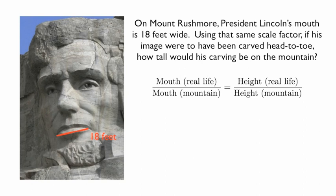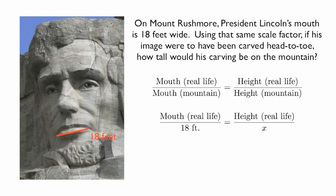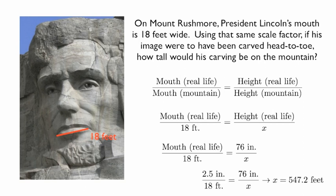We'll set up proportions. We need mouth in real life divided by mouth on the mountain equals height in real life divided by height on the mountain. We know the mountain's mouth is 18 feet. Wikipedia search finds that Abe Lincoln's height is 76 inches, 6 feet 4 inches tall. We can ballpark how wide his mouth would be, maybe 2 and a half inches. If we say 2 and a half inches, then the height of Abe Lincoln were he to be carved head to toe on the mountain would be 547.2 feet. That's one-tenth of a mile tall.